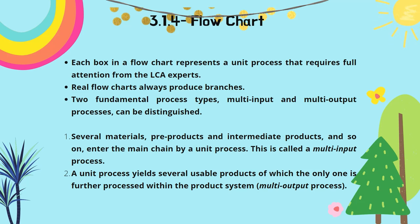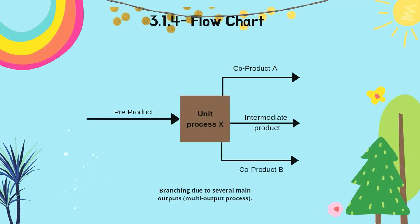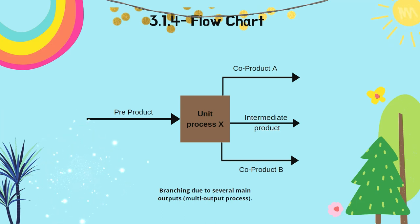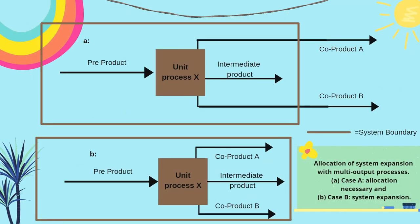As we can see in the next diagram, the pre-products produce co-product A and co-product B as well as an intermediate product — this is the multi-output process. In case A it is shown that allocation is required, and in case B it shows system expansion.